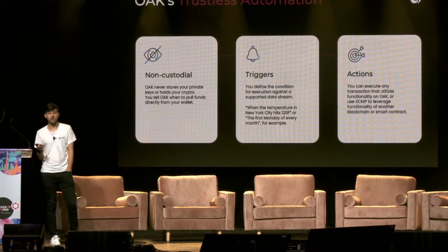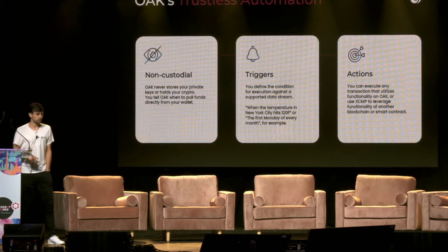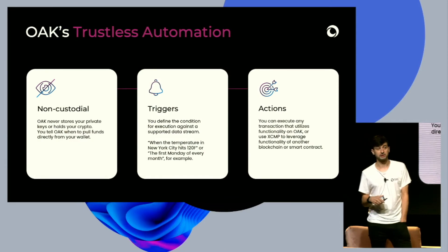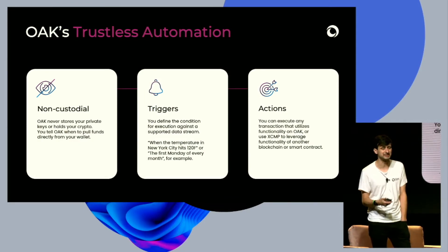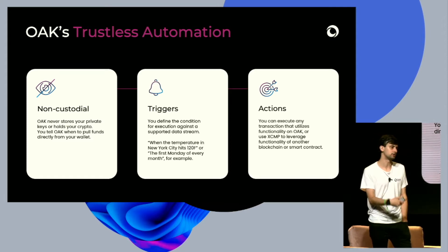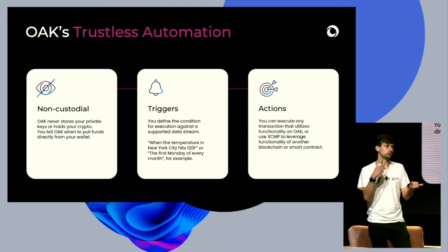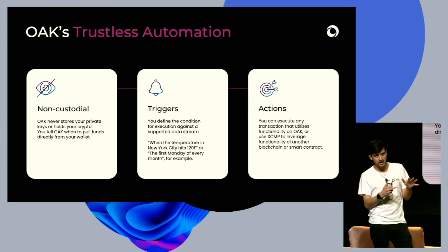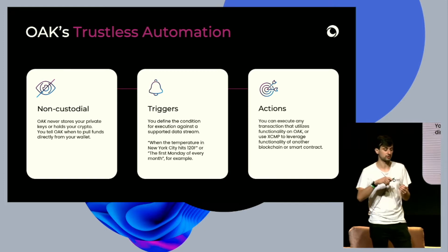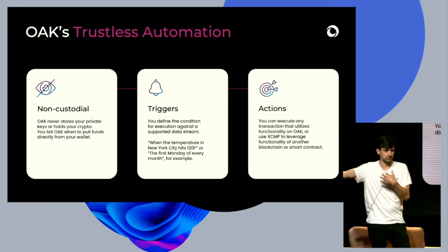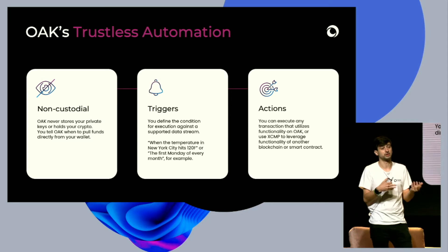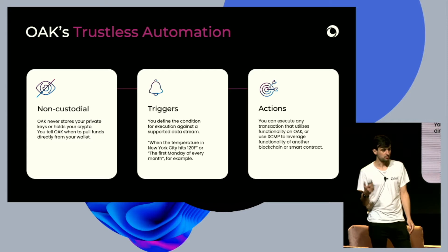The second concept is knowing when to fire those events — when to execute. We call it a trigger. A trigger is made up of something we call a data stream — price of ETH, temperature in New York City, time — some piece of information that's constantly updating. And then a condition: the price of ETH is greater than $5,000, the temperature in New York City is 120 degrees, it's the last Friday of the month at 4 PM. Now that we know when to execute, we need to do something, and we call those actions. While Oak will have a number of actions on-chain like transferring assets and automatically restaking rewards, the interesting ones happen when we use XCM to actually perform actions on other chains or smart contracts. This way you're not just limited to Oak, but the entire Polkadot ecosystem.